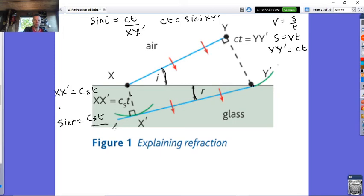Taking these two equations, you can probably see where it's going now. I've got to rearrange that one: cst is equal to sin r times XY'. I'm now going to take my ct and divide it by cst.